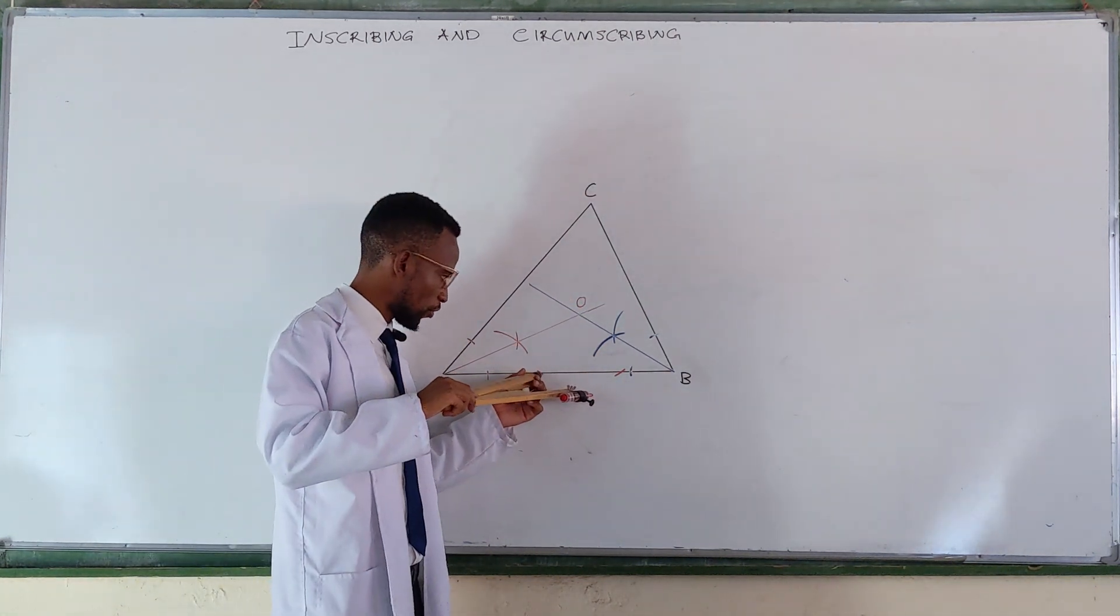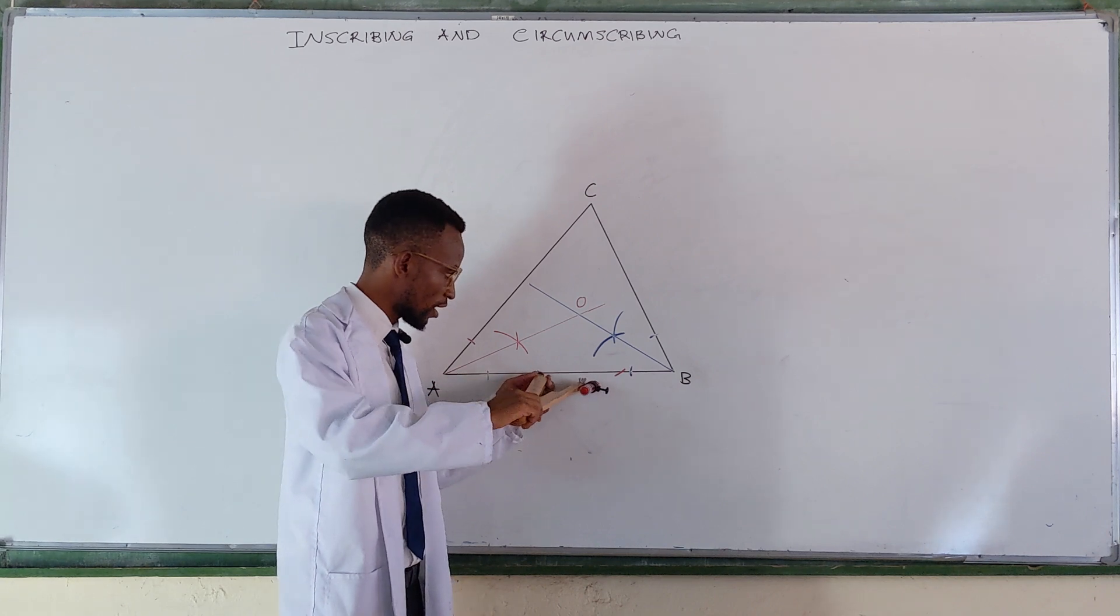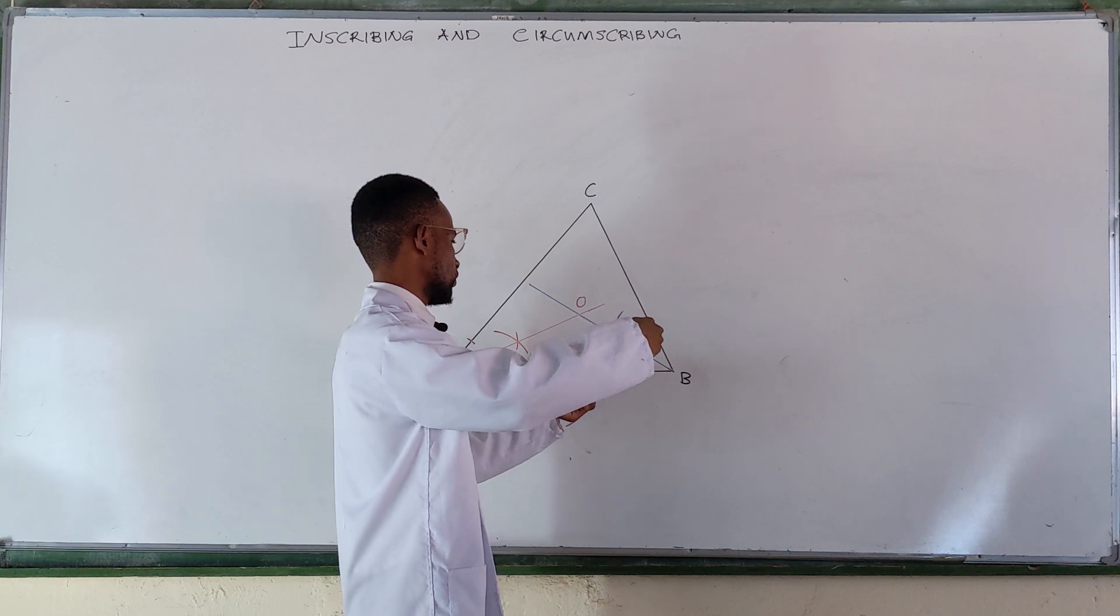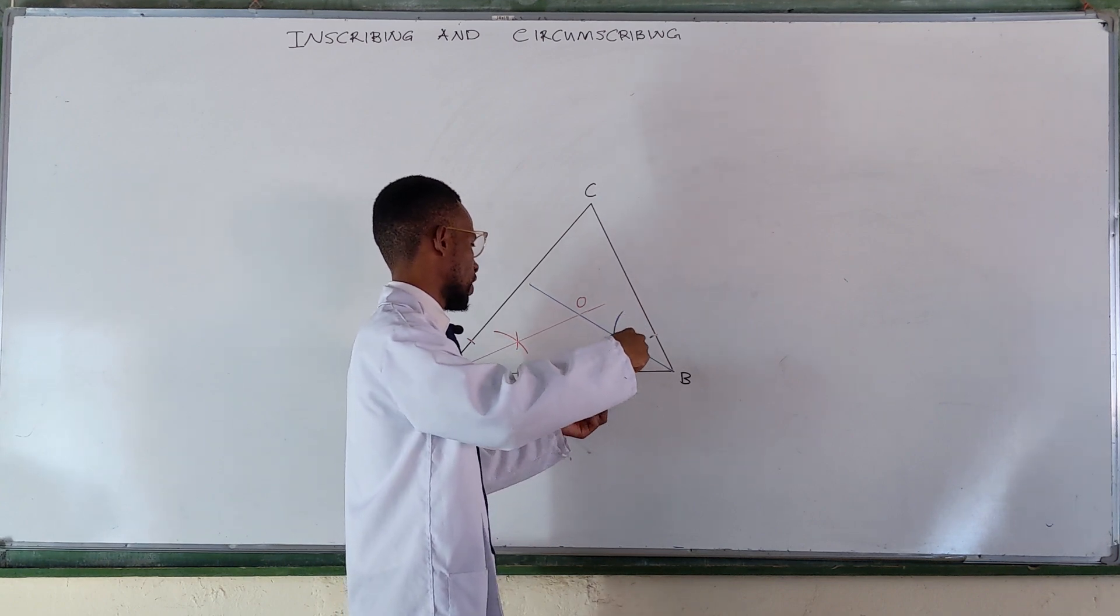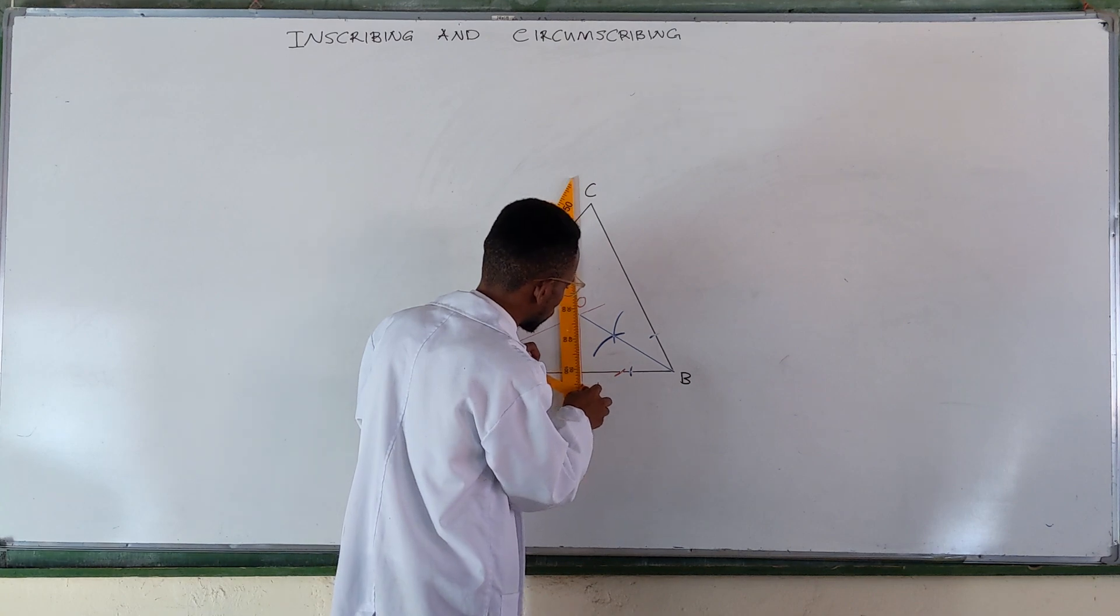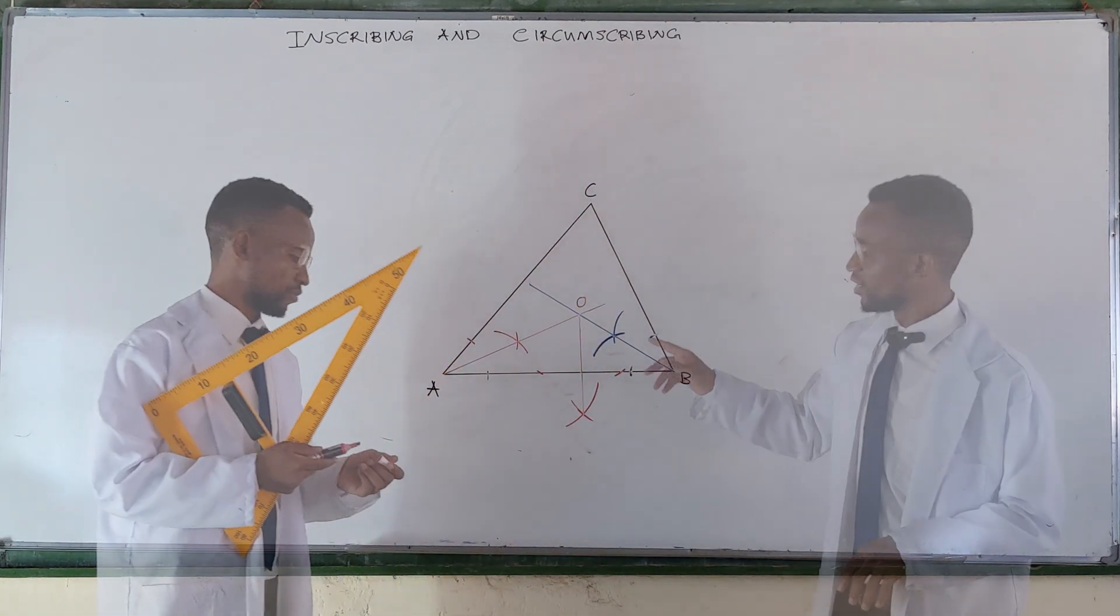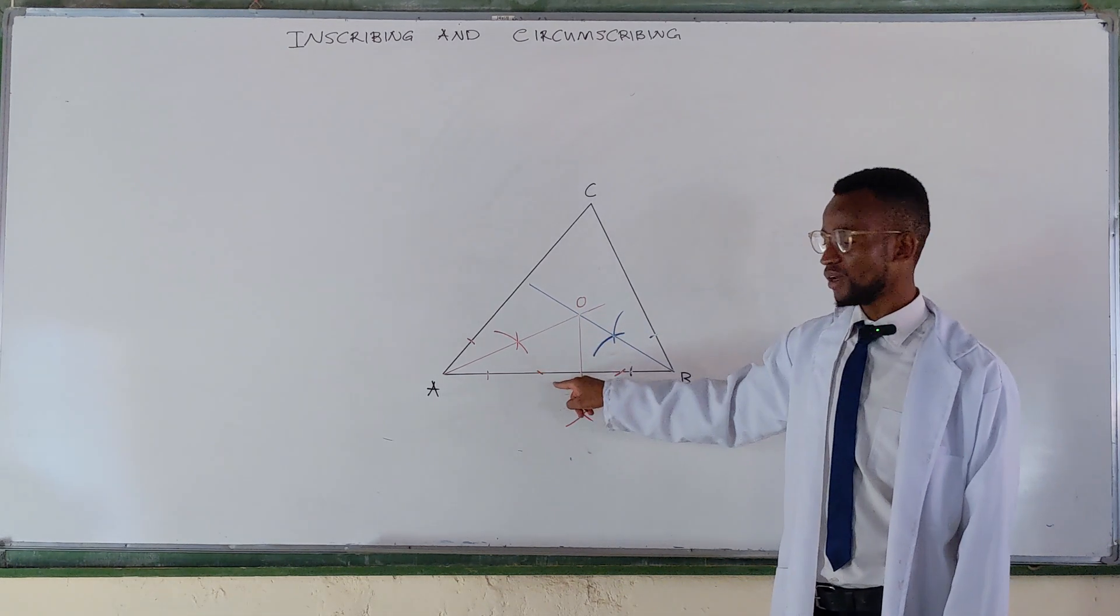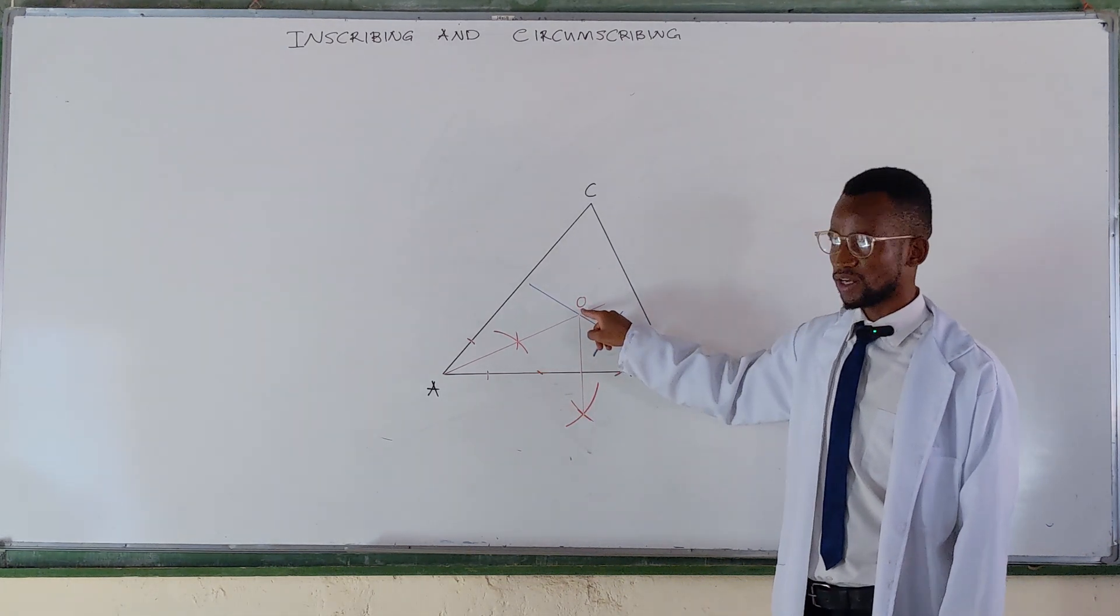From these two points you strike an arc from that point and another one from that point. So you get your compass, place it at this point, strike an arc there, strike an arc there while standing at this point.